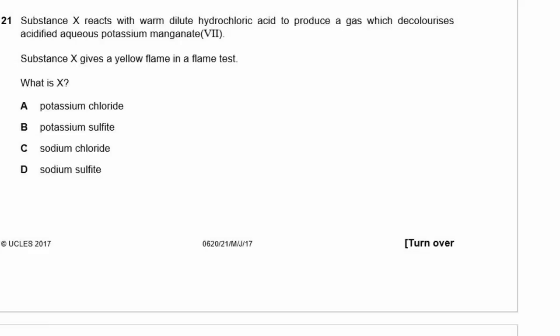Question 21. Substance X reacts with warm dilute hydrochloric acid to produce a gas that decolorizes acidified aqueous potassium manganate — that's a test for sulfites. Substance X gives a yellow flame in a flame test — that's the result for sodium. So X is sodium sulfite, which is D.